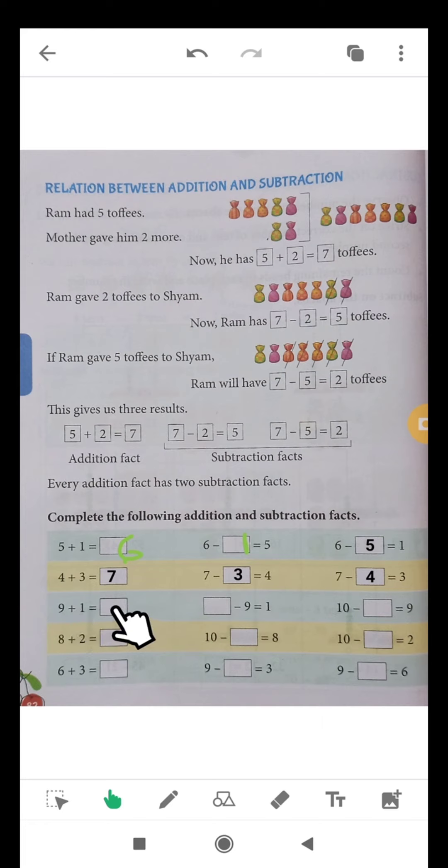10 minus 1 is equal to 9. 10 minus 9 is equal to 1. That is the subtraction fact. Is it complete? Easy, isn't it?